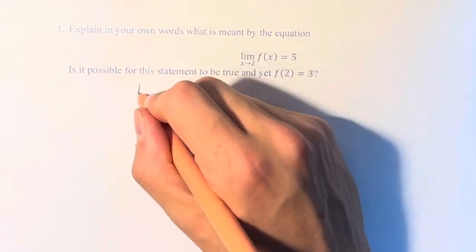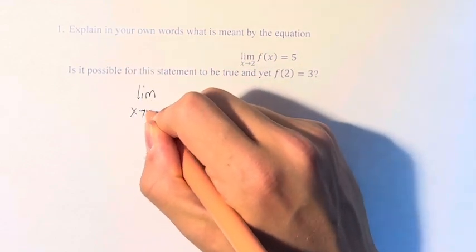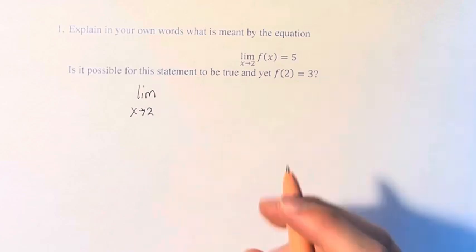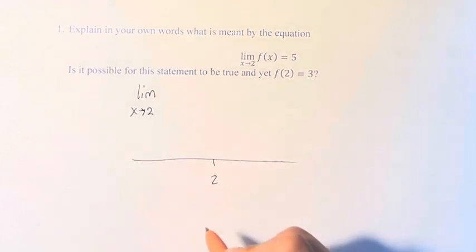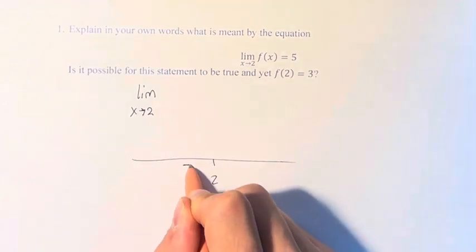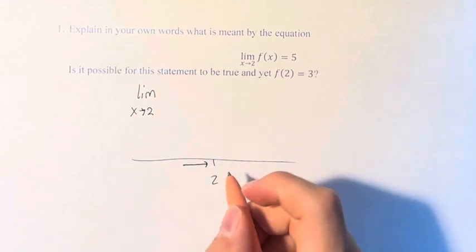So what this limit means is that x is approaching 2. So if we're looking at the number line and we have 2, this means we're going as close as we possibly can to 2 from both sides.